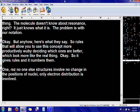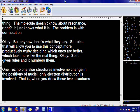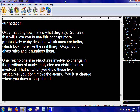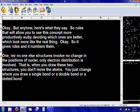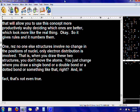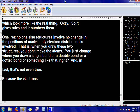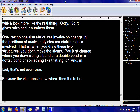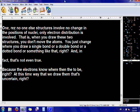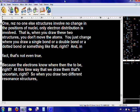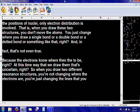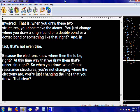That is, when you draw these two structures, you don't move the atoms. You just change where you draw a single bond, or a double bond, or a dotted bond, or something like that. And in fact, that's not even true, because the electrons know where they want to be. It's the way we draw them that's uncertain. So when you draw two different resonance structures, you're not changing where the electrons are, you're just changing the lines you draw. Is that clear? It's our notation that's at fault.